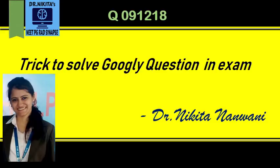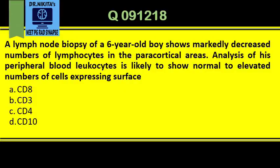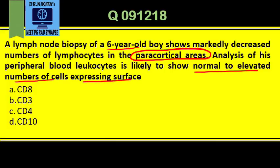So we have this question: a lymph node biopsy of a six-year-old boy shows a markedly decreased number of lymphocytes in the paracortical areas. Analysis of his peripheral blood leukocytes is likely to show a normal to elevated number of cells expressing which surface CD marker?